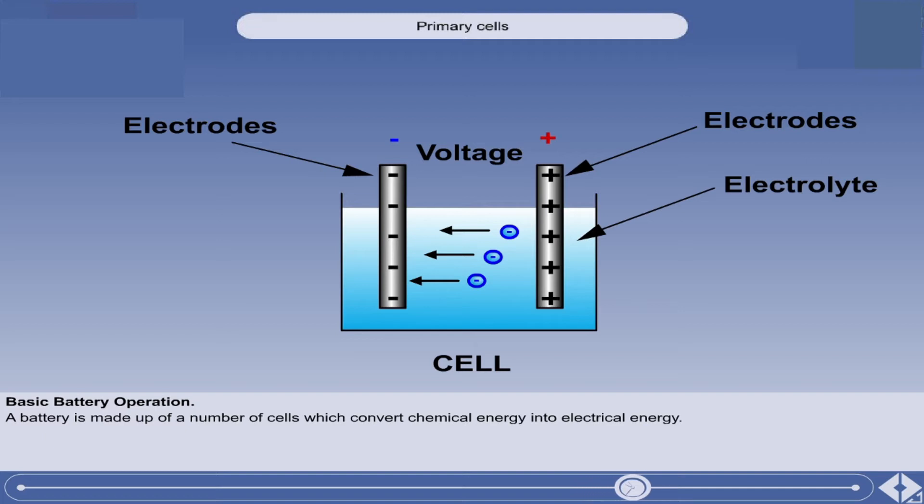The cells of a battery can be split into two types known as primary cells and secondary cells. In this lesson we will look at primary cells.